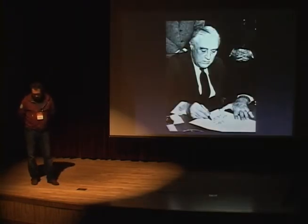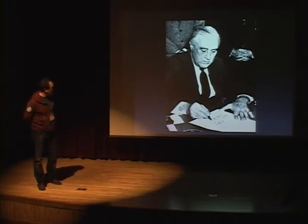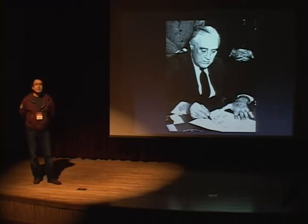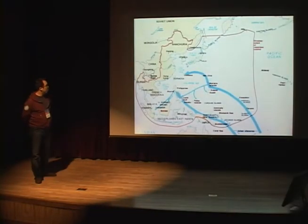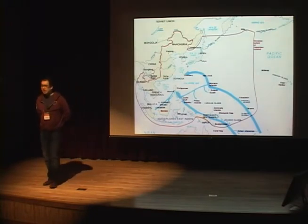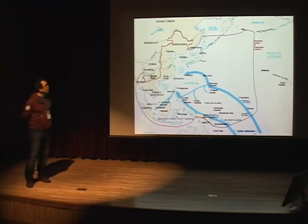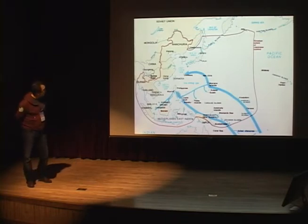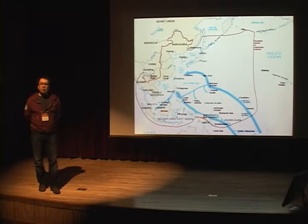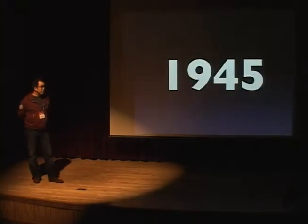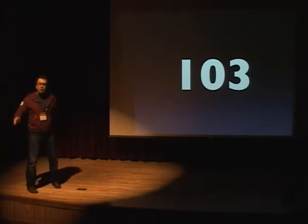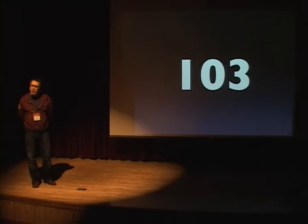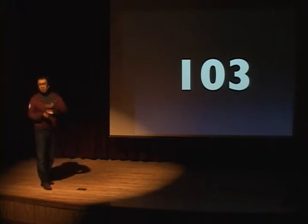What happened in 1941 was that the Monroe Doctrine backfired when the Japanese went east and attacked Pearl Harbor. FDR signed the War Doctrine against Japan. By 1944-1945, World War II ended. Since 1945, there have been 103 countries that claimed independence — 103 new countries after 1945.